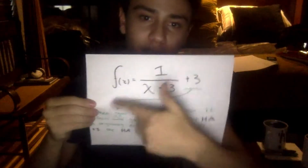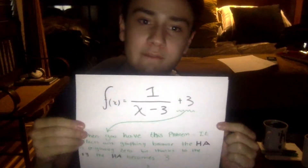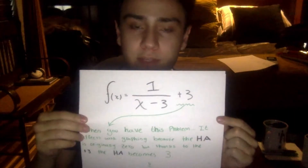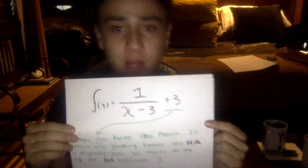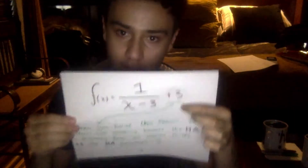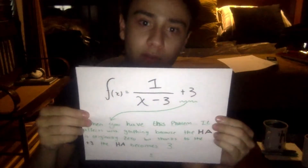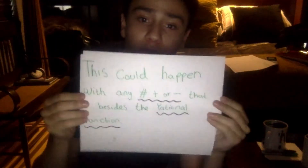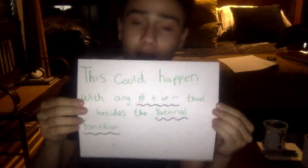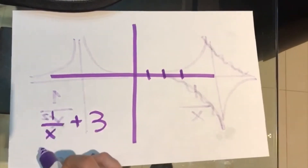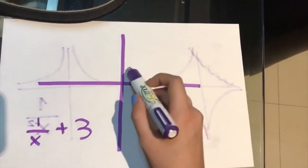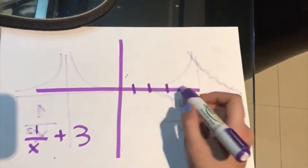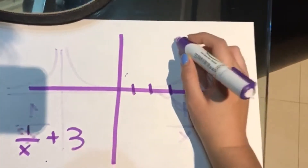When you have this kind of problem, it affects graphing because the horizontal asymptote is supposed to be originally zero. But thanks to the plus three, the horizontal asymptote becomes three. This can happen with any kind of function that has a positive or negative shift. For example, one over x plus three: instead of the standard position, your lines will move three to the right, and that will be your asymptote.